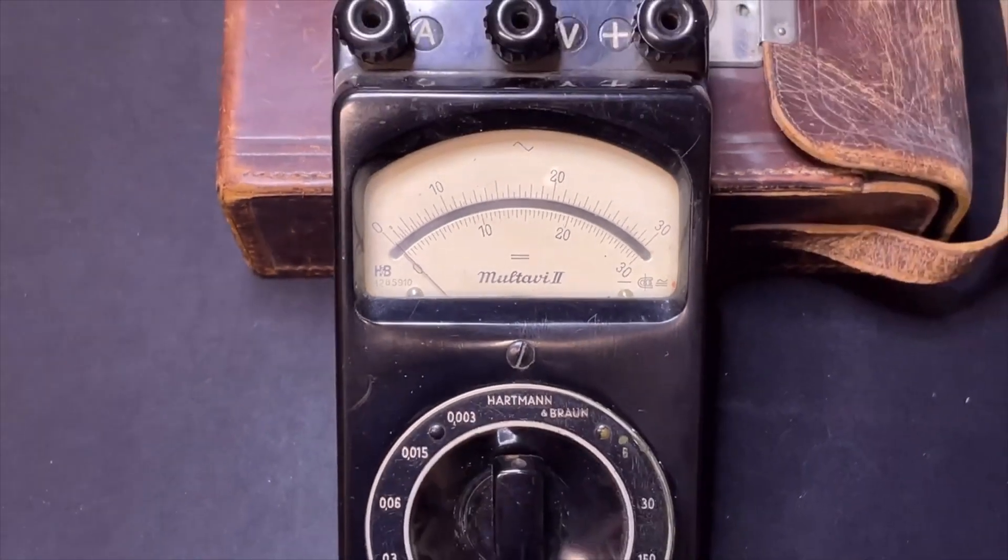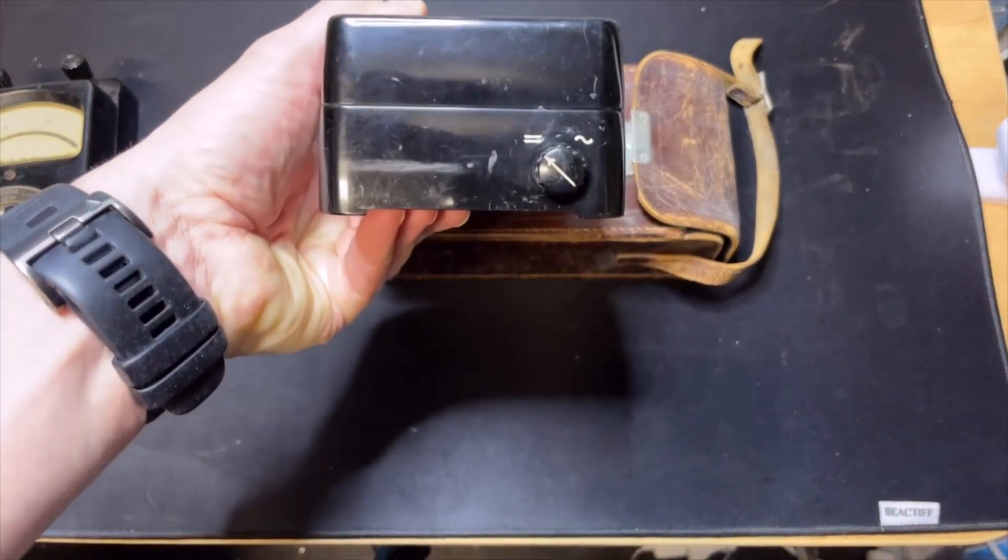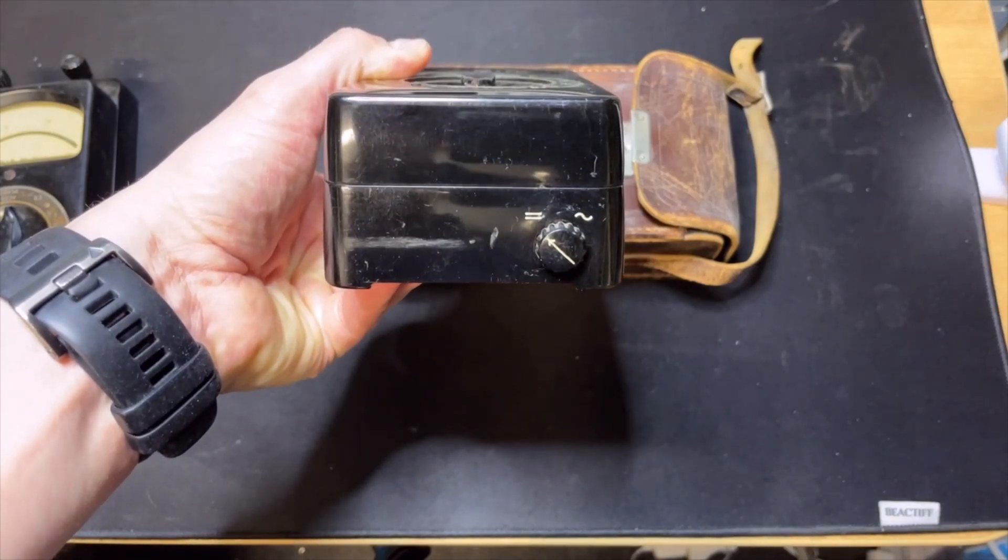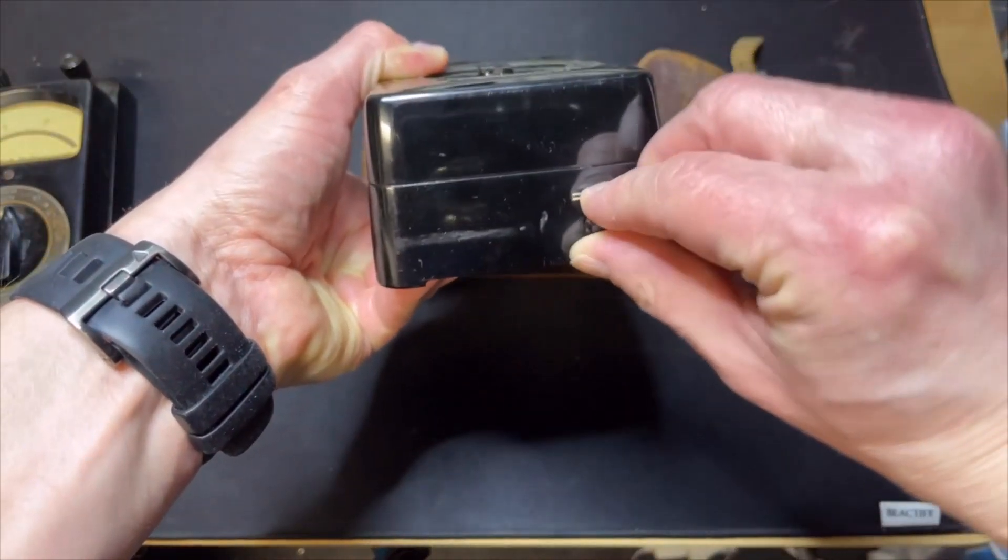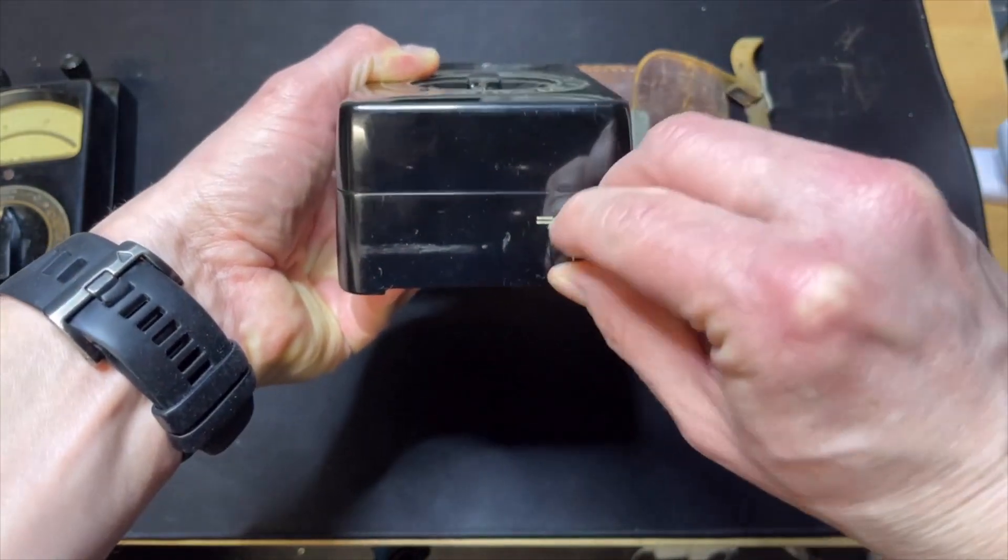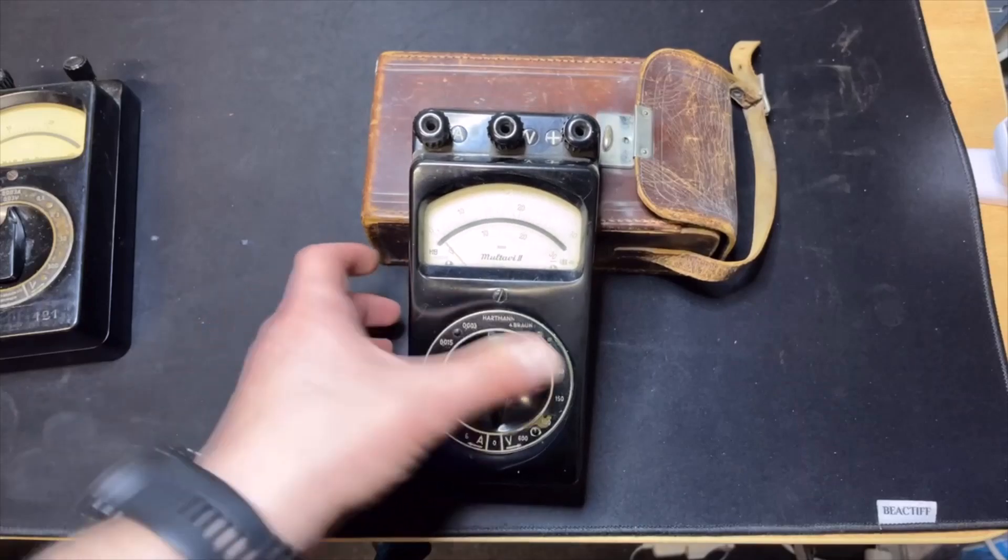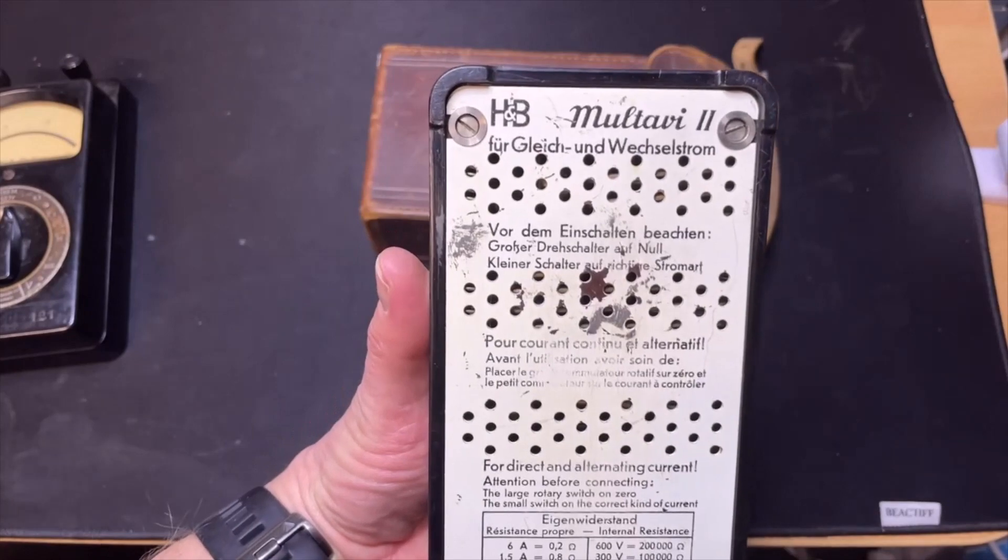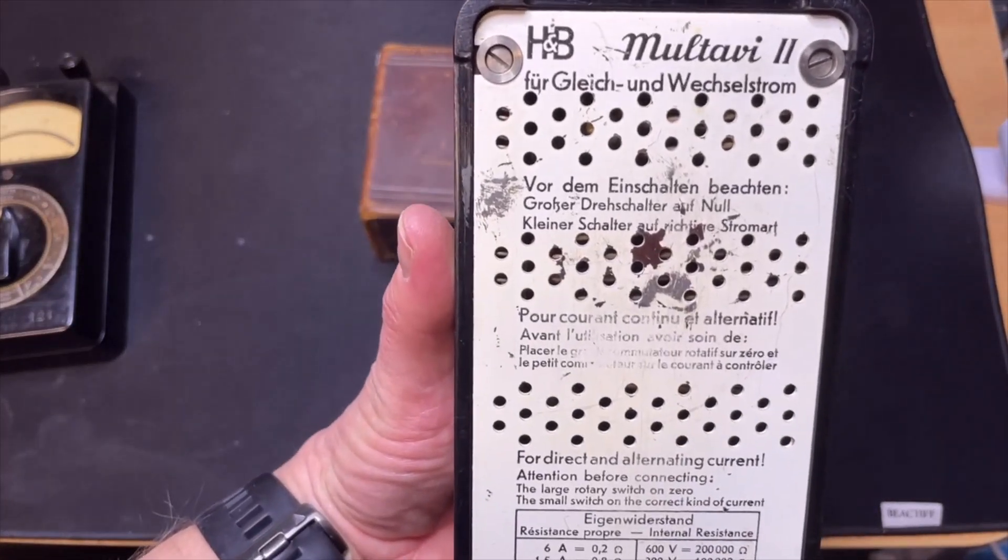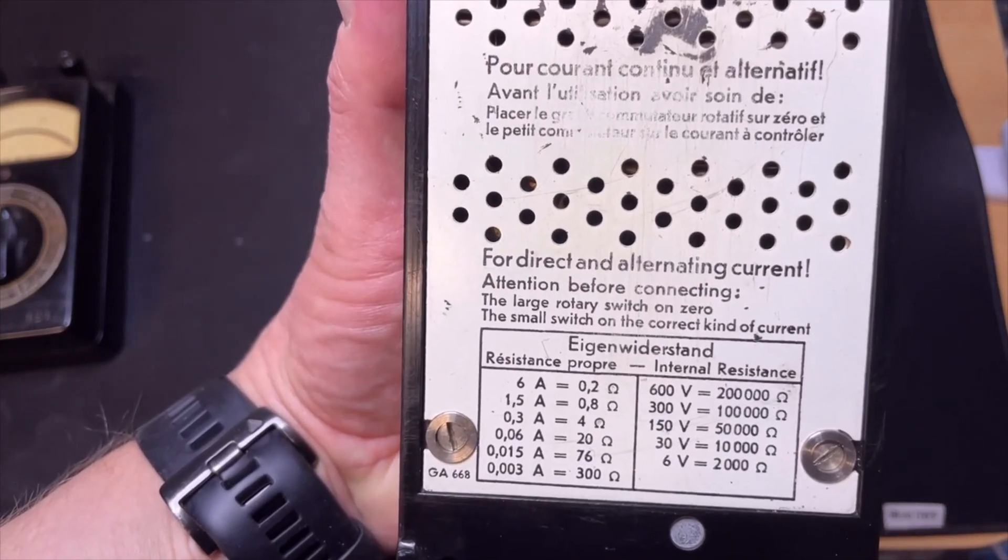You switch that over not on the main switch here, but there is a button here on the bottom. Here you switch from DC to AC, and I think the meter needs to be used flat on the bottom. But here are some, it is in German, French, but also in English.